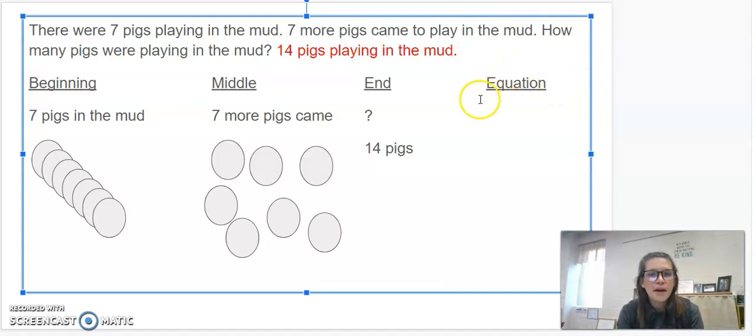Now, I bet you're all wondering, what is this interesting word over here that we haven't talked about yet? Well, mathematicians, that word is called equation. An equation is a number sentence. A number sentence shows adding, subtracting, multiplying, and dividing.